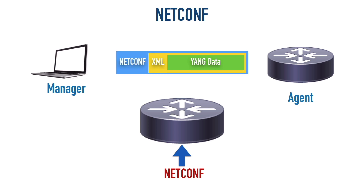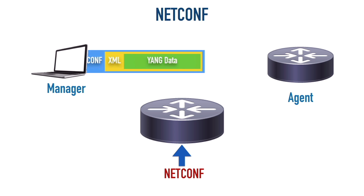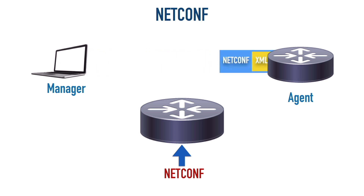NetConf typically uses Secure Shell to communicate between devices. We could go in and use Secure Shell ourselves, but instead we want to use one of the available utilities — I'm going to show you NC client as one such utility. The data represents interface parameters or routing protocol parameters as a couple of examples, in a Yang data model encoded in XML inside XML tags, being transported using NetConf going back and forth between the manager and the agent.